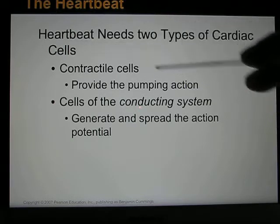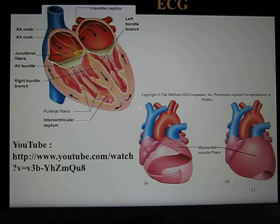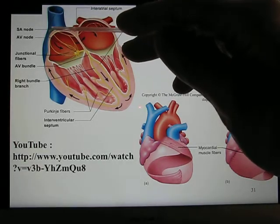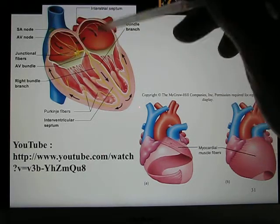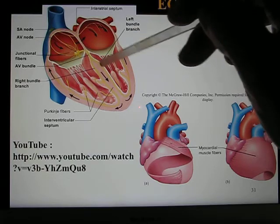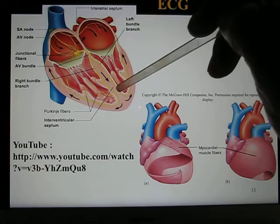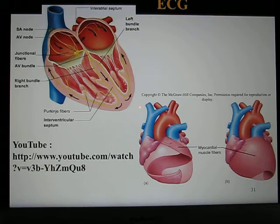Heart muscle cells can be divided into contractile cells, which are responsible for producing the contraction force, and conducting cells, also called pacemaker cells, which spontaneously generate action potentials. The signal telling the heart to contract comes from the heart itself. These pacemaker cells fire together, starting from the SA node on the right atrium, spreading to the two atria, then to the AV node, down through the bundle branches to the Purkinje fibers, and finally to both ventricles. Because they all fire together, this electrical activity can be recorded as an EKG — electrocardiography.